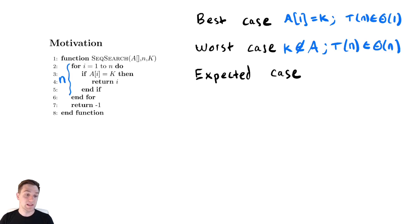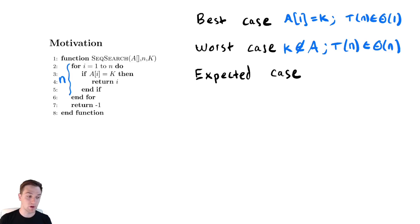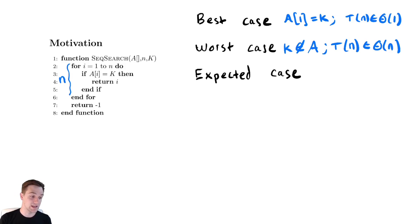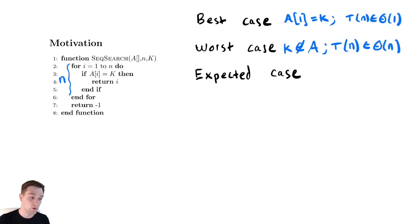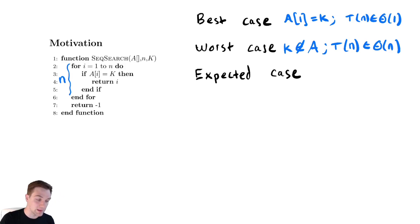Notice that the best case and the worst case are not the same. So then a natural question would be: that might be the worst case and that might be the best case, but what do we actually get when we run it? Do we have some idea of how long it takes on average, or how long we can expect it to take? That is the question we're going to try to answer. To answer that we're going to need to use a little bit of probability and we're going to need to make some assumptions.